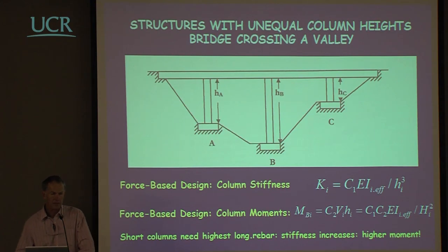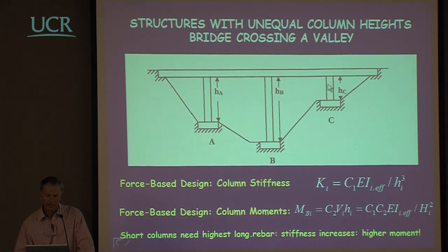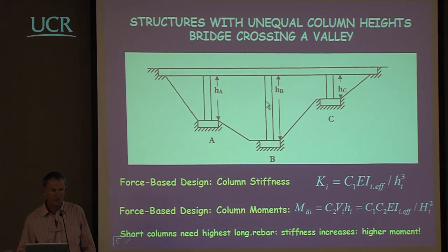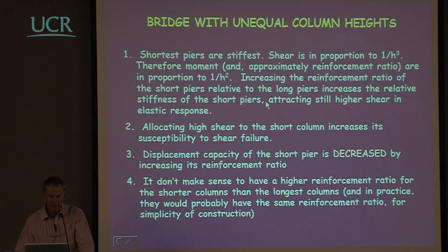Just re-emphasising some of the problems with force-based design: if taken correctly into account, it tells us that in a simple structure under transverse response we should be allocating most of the reinforcing steel and most of the shear resistance to the shorter pier rather than the longer piers. We've already discussed this — it doesn't make any sense from a design point of view.